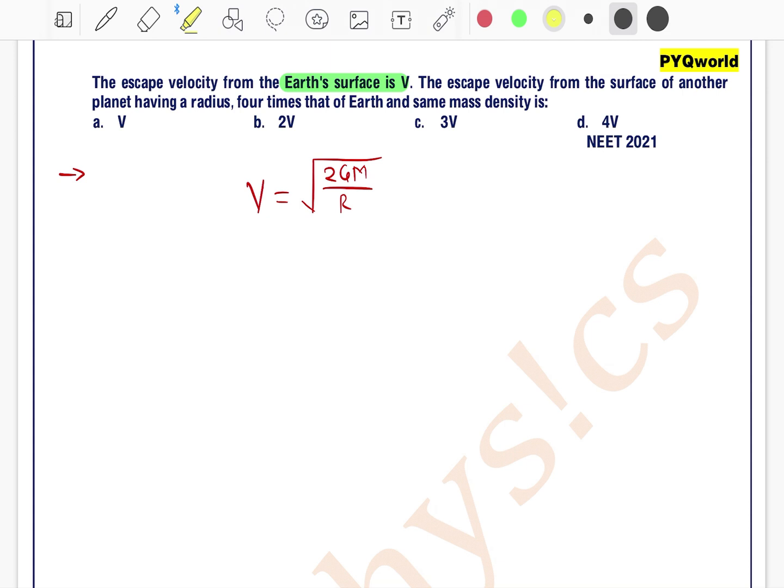Now it is given that from earth's surface is v and the escape velocity from the surface of another planet having radius 4 times that of earth and same mass density. Right, mass density they have commented on mass density not on mass.